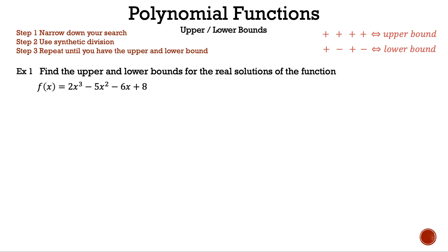Before we start, let's talk about what we want to see. On the top right, we have positive, positive, positive, positive, which is an upper bound using statement 1, and we have positive, negative, positive, negative, which is a lower bound using statement 2.